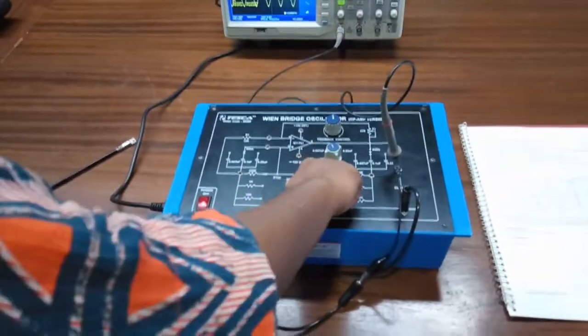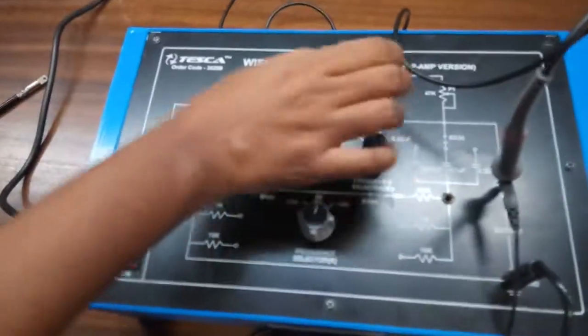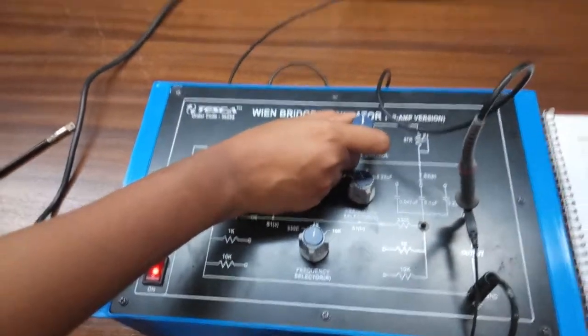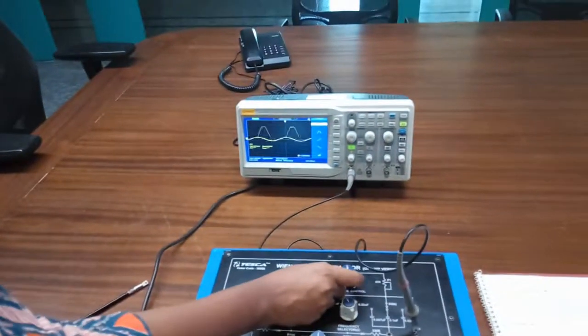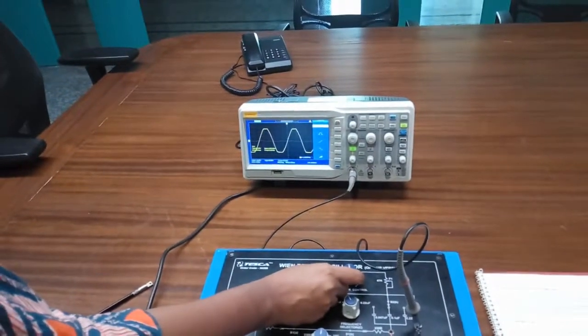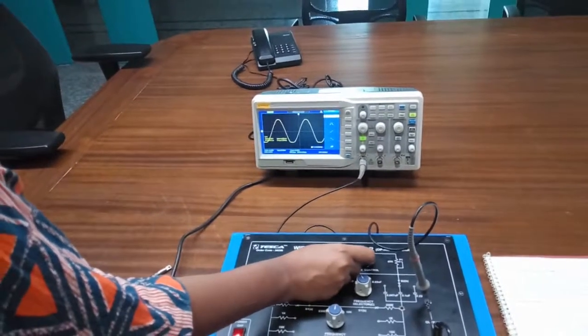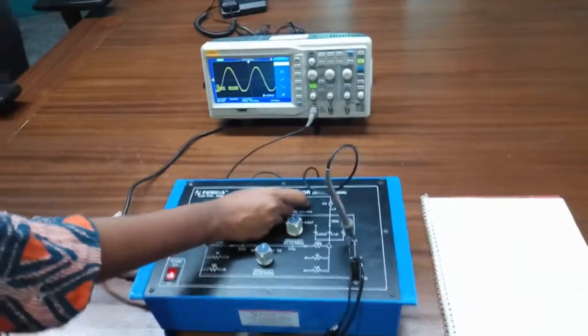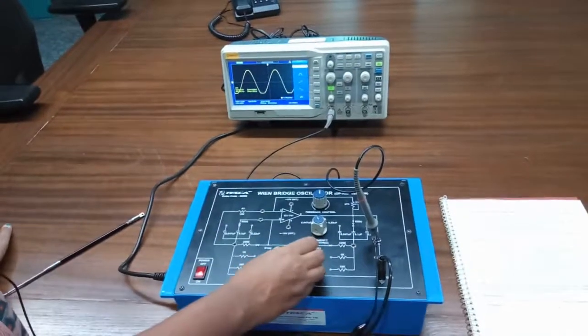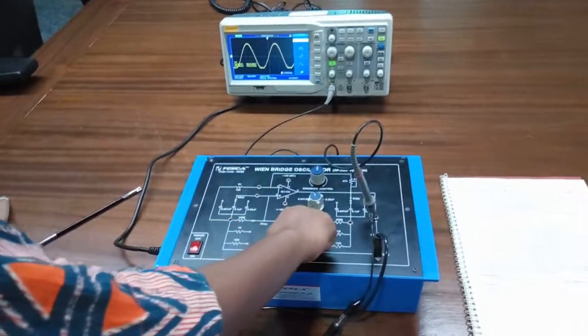Now we will change the value of this resistor to 1k, and again vary this potentiometer to get a clean sine wave. The frequency is 3.35 kilohertz. Now change this to 10k, and the value is around 340 hertz.